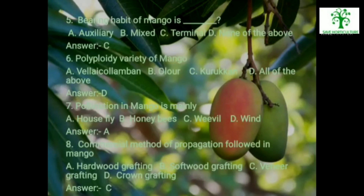Fifth: Bearing habit of mango is — options are Auxiliary, Mixed, Terminal, None of the above. The answer is Terminal. Sixth: Polyploidy variety of mango — options are Filai, Columban, Olor, Kurukanan, All of the above. The answer is All of the above.